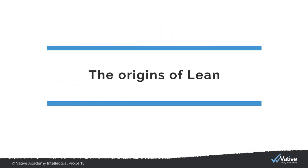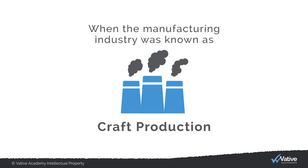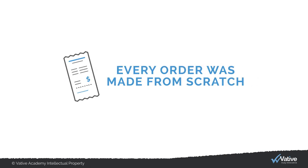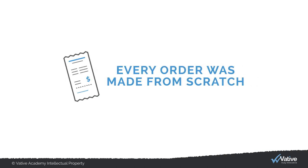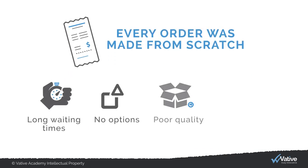The origins of lean begin at the end of the industrial revolution, when the manufacturing industry was known as craft production. Every product was made from scratch once the order arrived. There were long waiting times, no options, poor quality and no consistency.